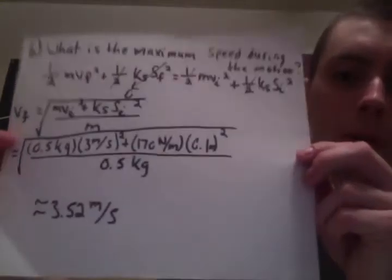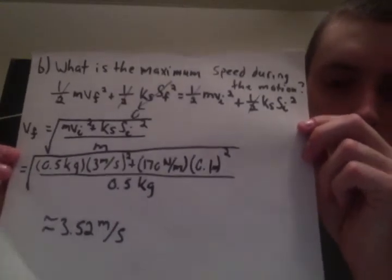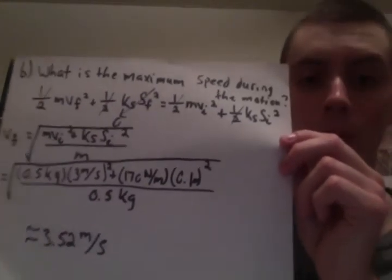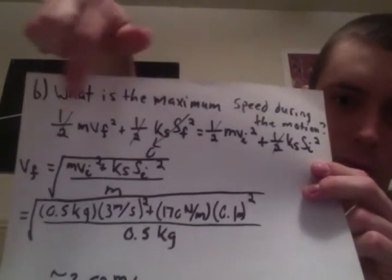Part two asks for the maximum speed during the motion. Again, based off of the same assumption that our work is zero, that's how I was quick to yield this form here.